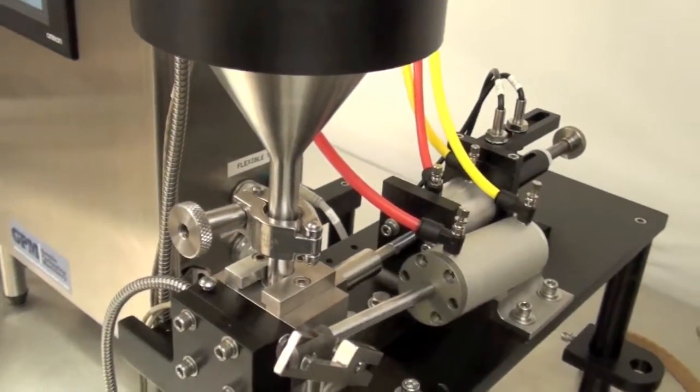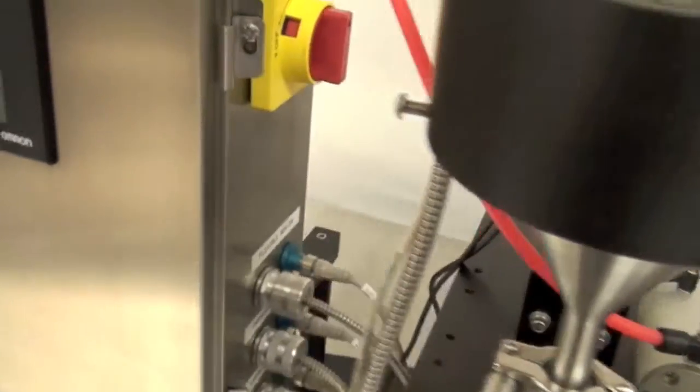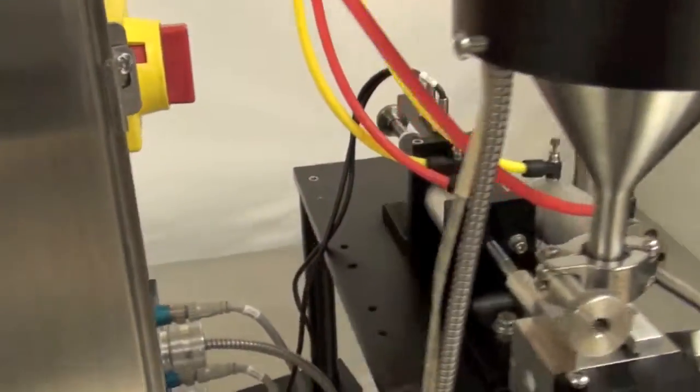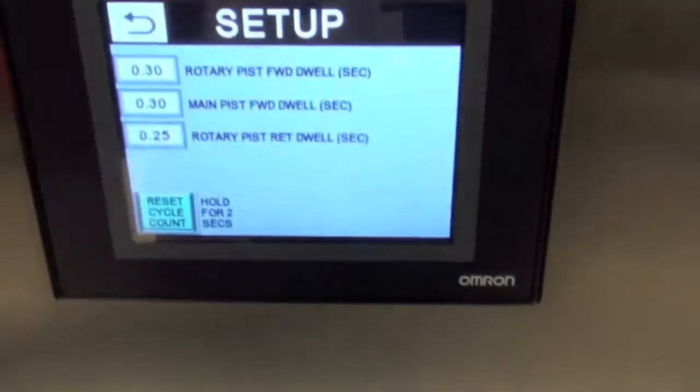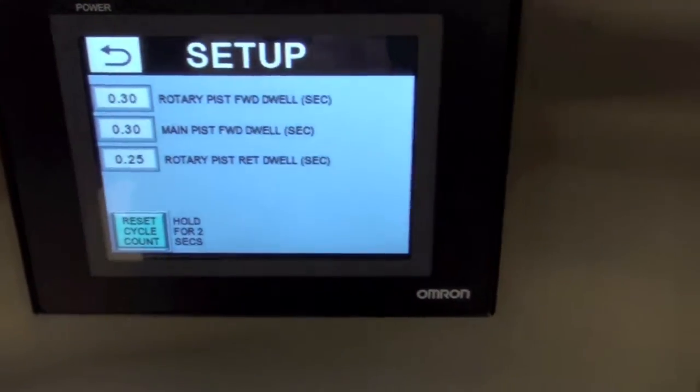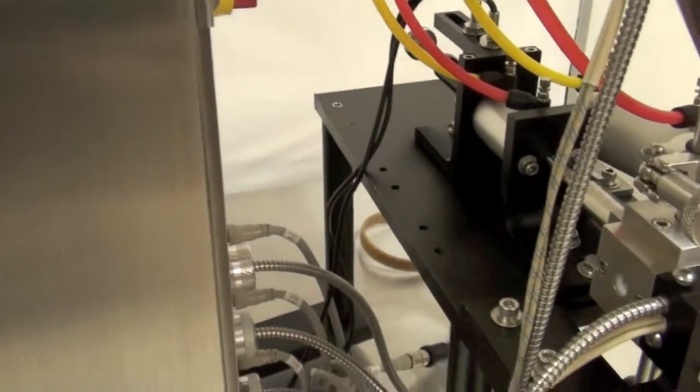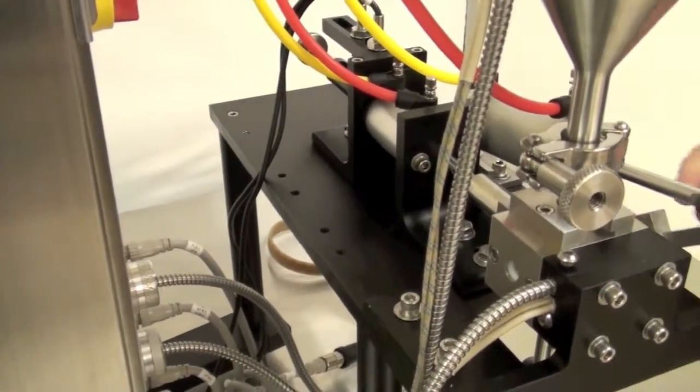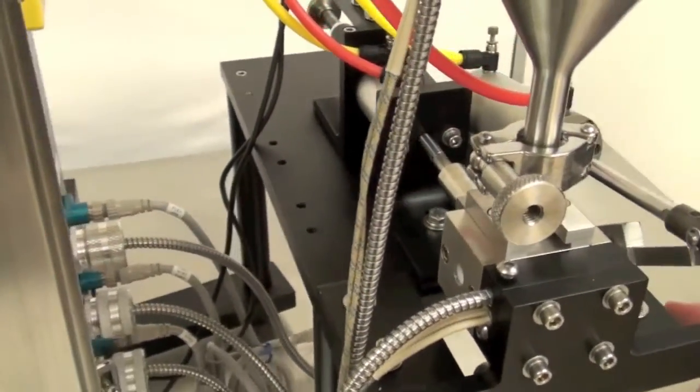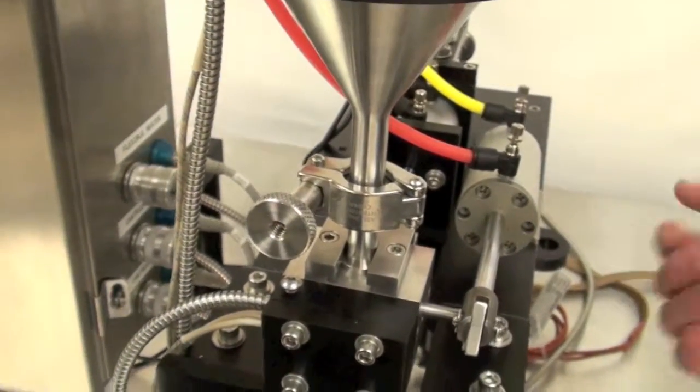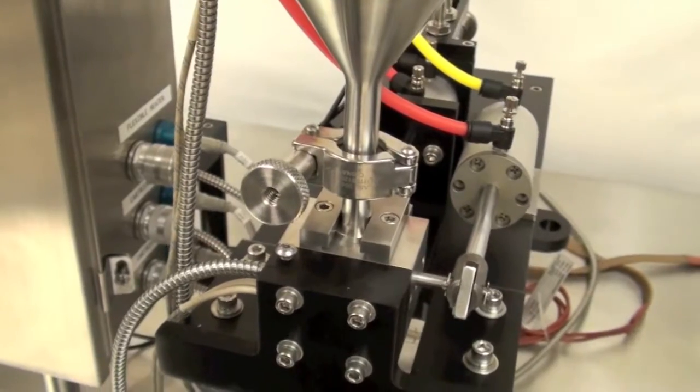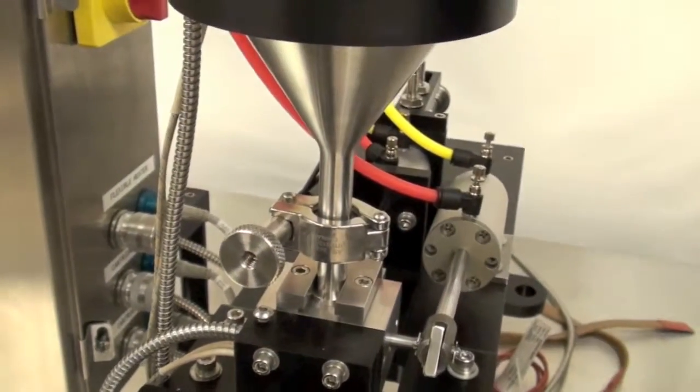So the rotary piston forward dwell time monitors how long after the valve opens before the piston moves forward. In this case, it's set to 0.3 seconds. That means when the cycle is initiated, immediately the rotary piston opens, and then 0.3 seconds later, the main piston moves forward.